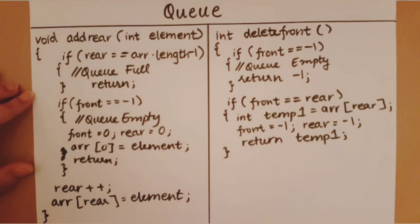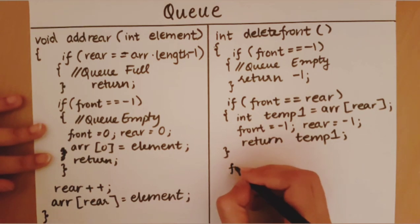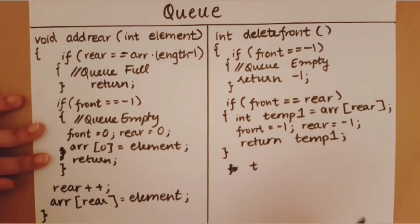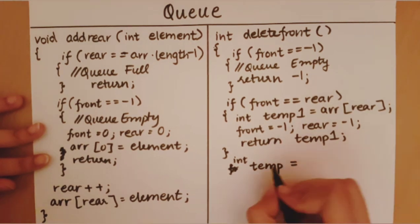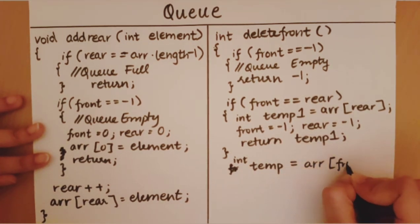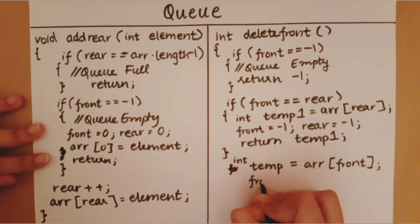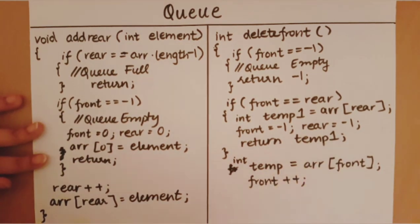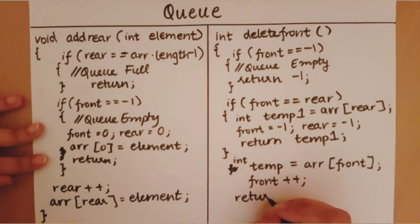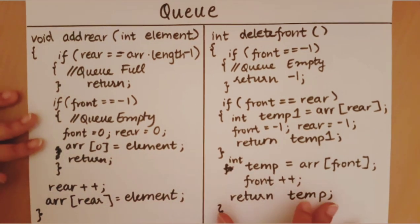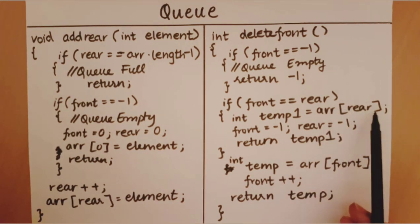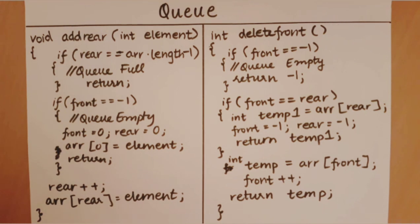After this we write code for every other element we need to delete — all the normal cases. When we delete from a queue, we first store the element we are going to delete in a temporary variable: temp equals array of front. Then I increment front by one, so the queue no longer keeps track of that element, and then I return temp. With this I come to the end of delete front. Note that I could have also given array of front in the last-element case, but that is the same as array of rear since front is equal to rear.